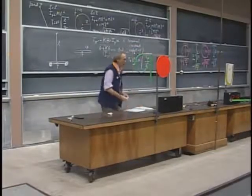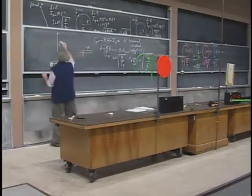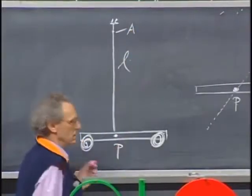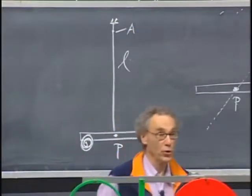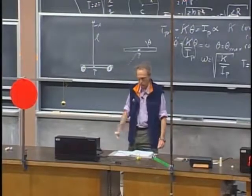Well, how about kappa? Kappa is a function of the cross-sectional area here, A, and the length L. And it's also a function of what kind of material you have. Whether you have steel or nylon makes a big difference. That's very intuitive, of course.